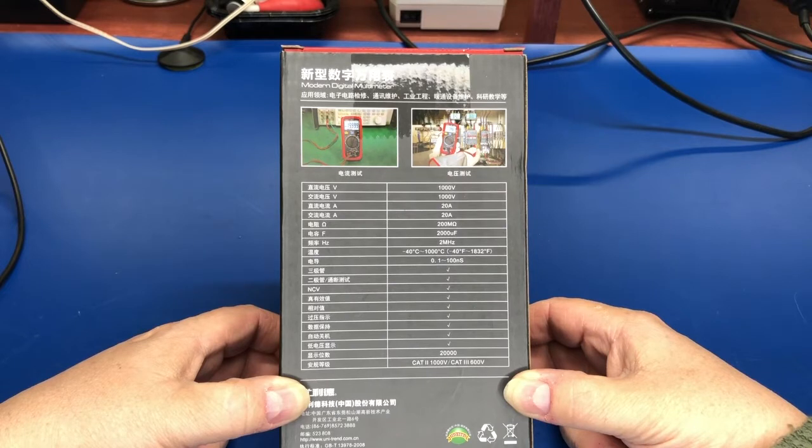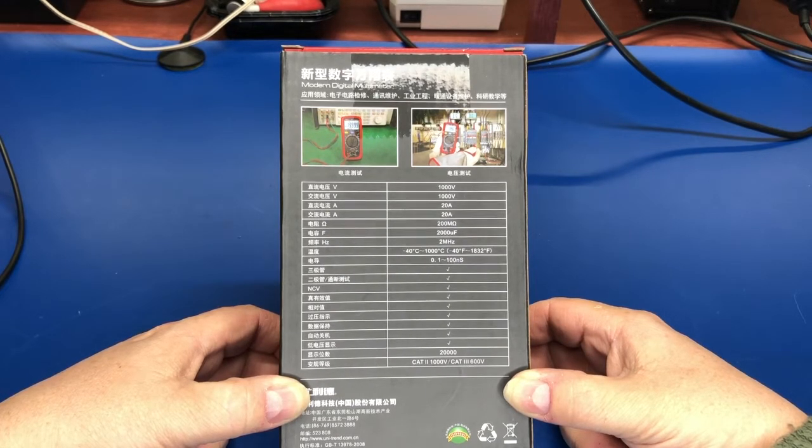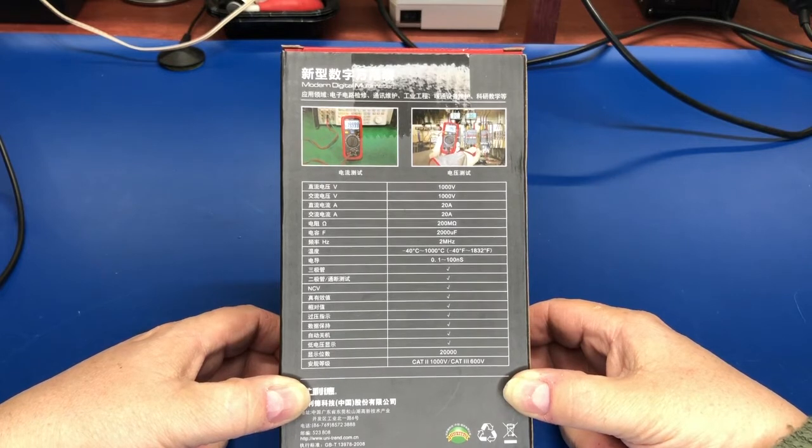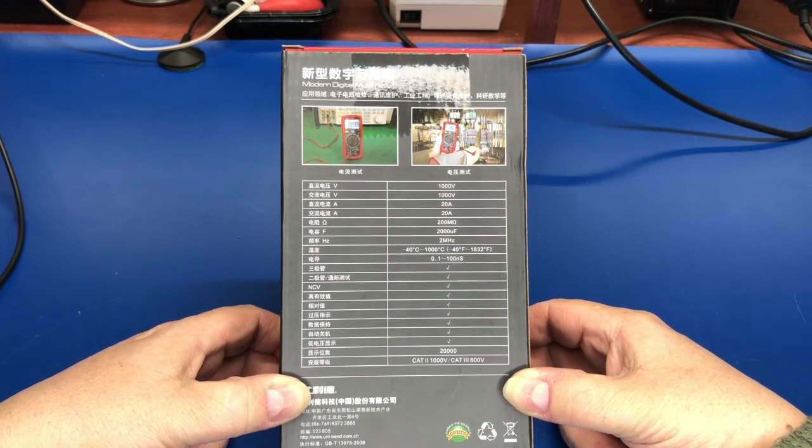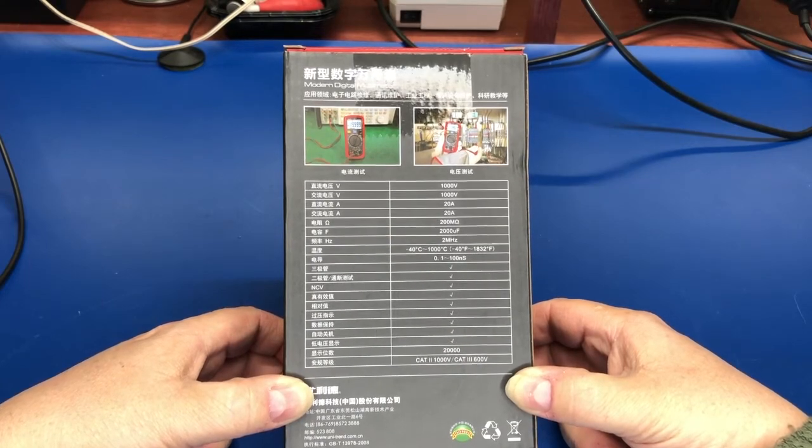It comes with a thermocouple, so it will do temperature measurement from minus 40C to 1000C. It will also measure nanosiemens, which is insulation testing, from 0.1 to 100 nanosiemens. And big thing, it is a 20,000 count meter. So it's a really nice feature for an inexpensive Chinese meter.